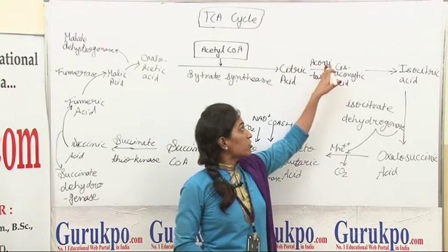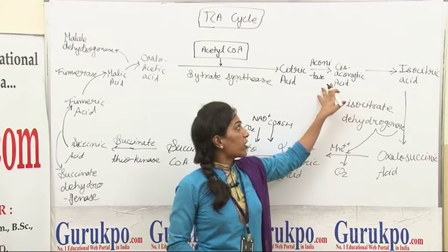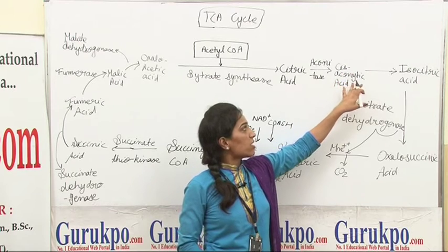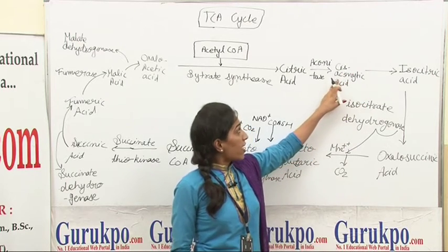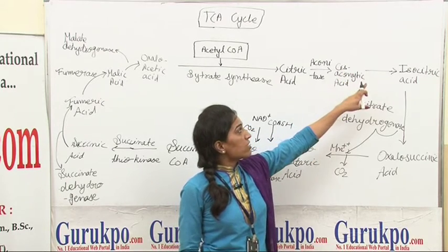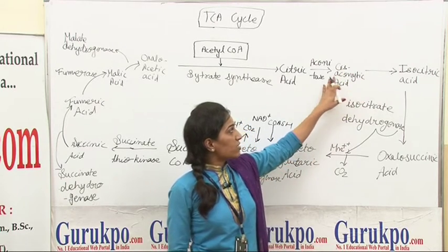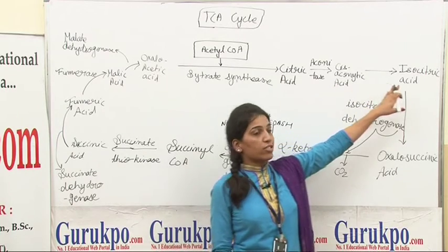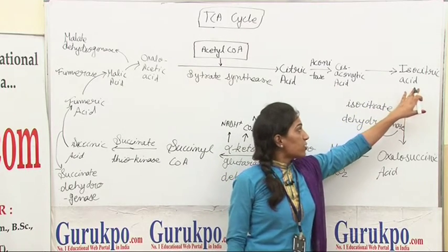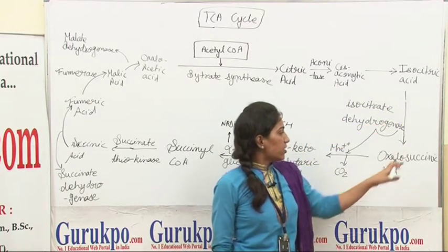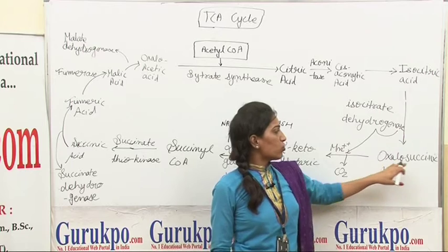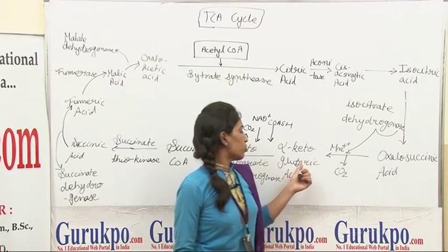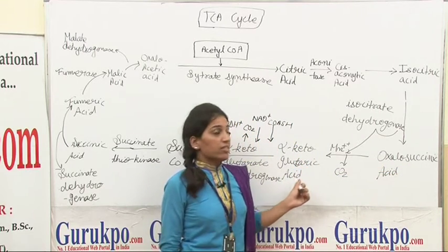This citric acid, in the presence of aconitase enzyme, converts into cis-aconitic acid, and again aconitase enzyme converts cis-aconitic acid into isocitric acid. This isocitric acid then converts into oxalosuccinic acid and alpha-ketoglutaric acid in a two-step reaction.